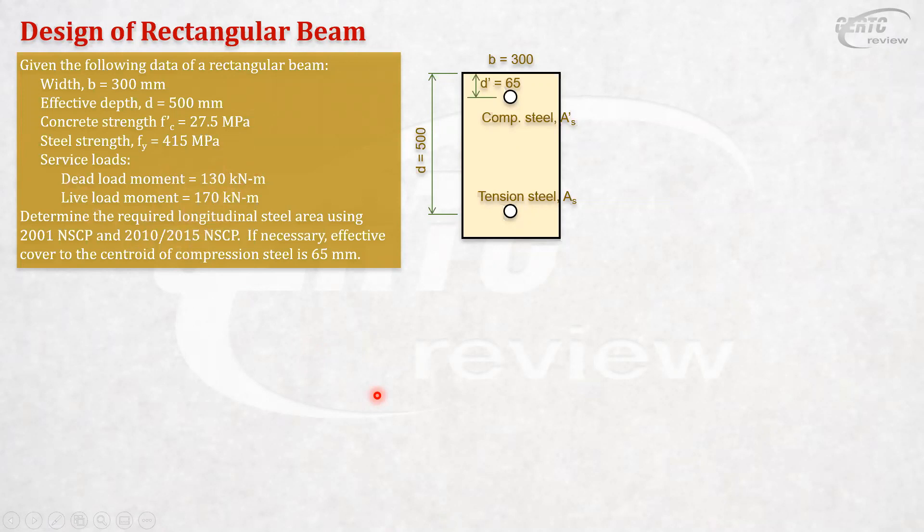We will solve this both using 2001 and 2010 codes. This is design of rectangular beam given the dimension B and the effective depth. Given are our fc prime and fy.